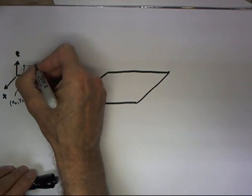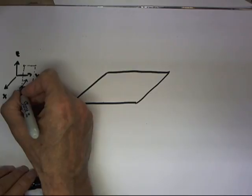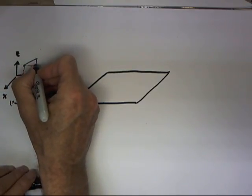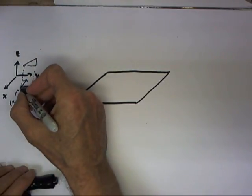This is the point we would get if the value of z did not increase according to this motion in the y direction. It does increase. So we're going to have something that looks like this.